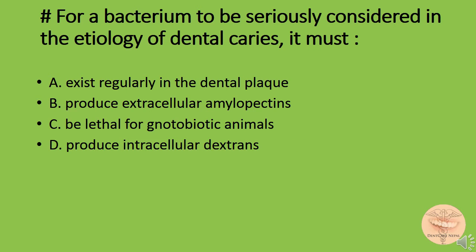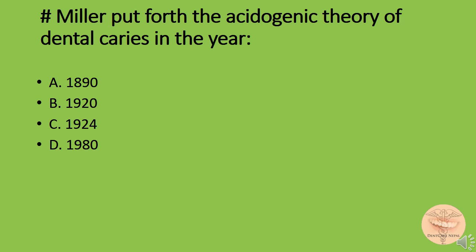For a bacterium to be seriously considered in the etiology of dental caries, it must: option A) exist regularly in the dental plaque, B) produce extracellular amylopectins, option C) be lethal for gnotobiotic animals, or option D) produce intracellular dextrans. The correct answer is option A: exist regularly in the dental plaque.